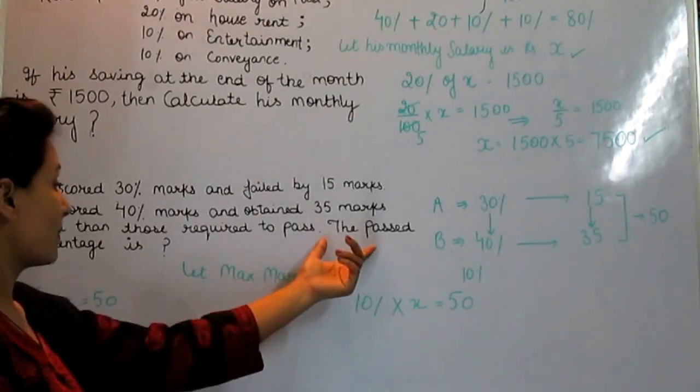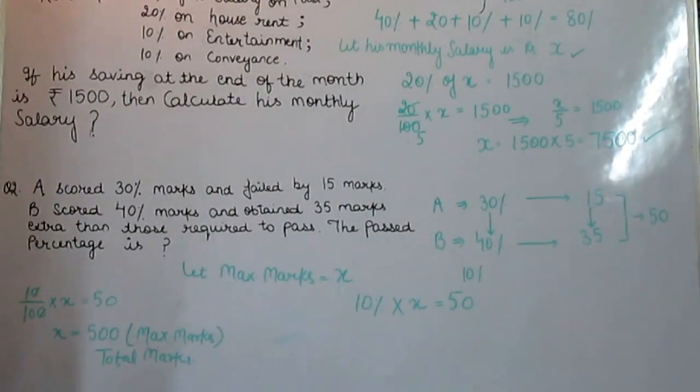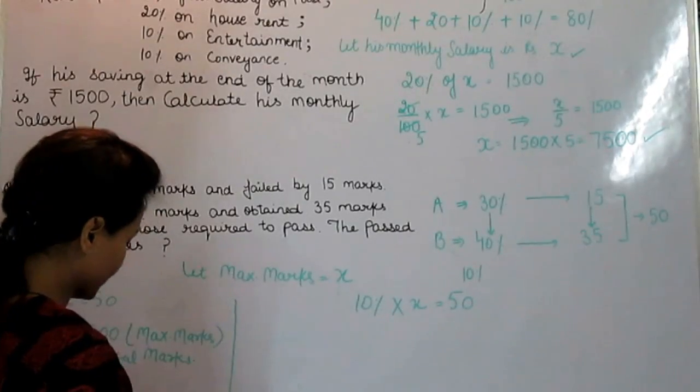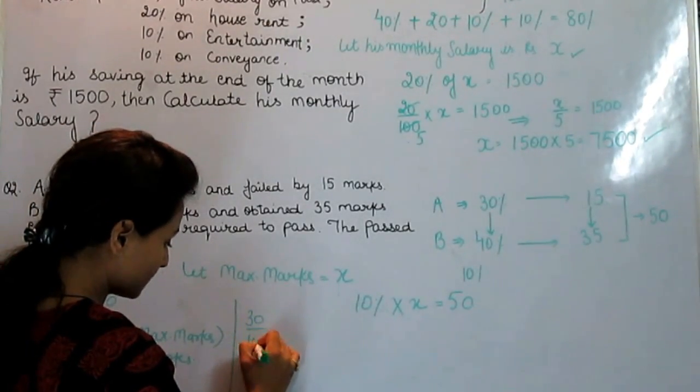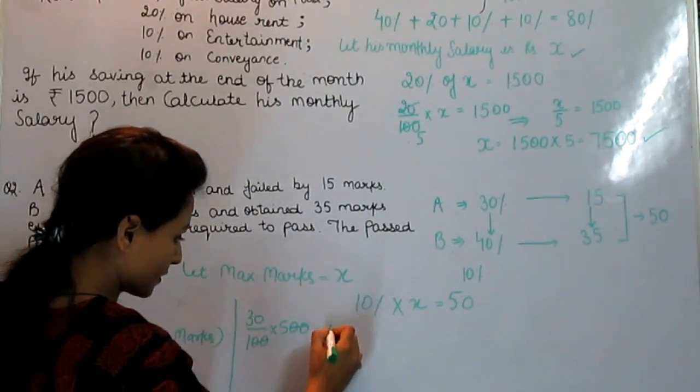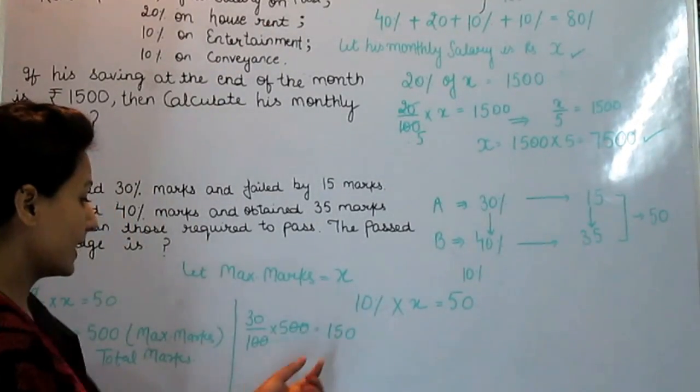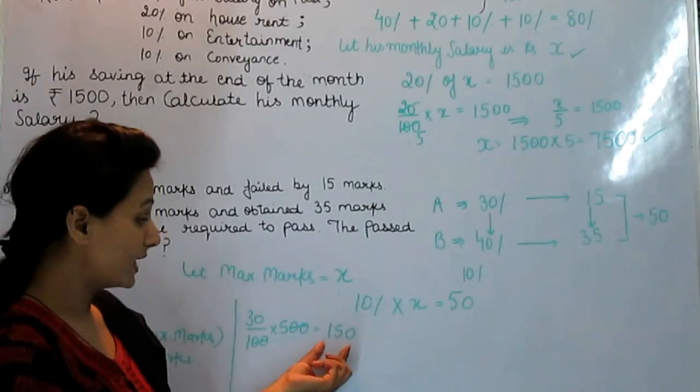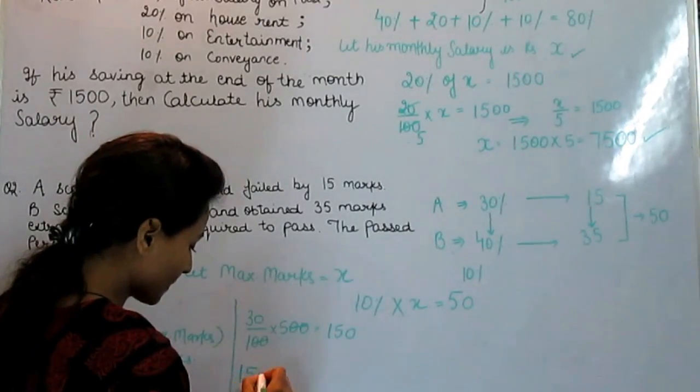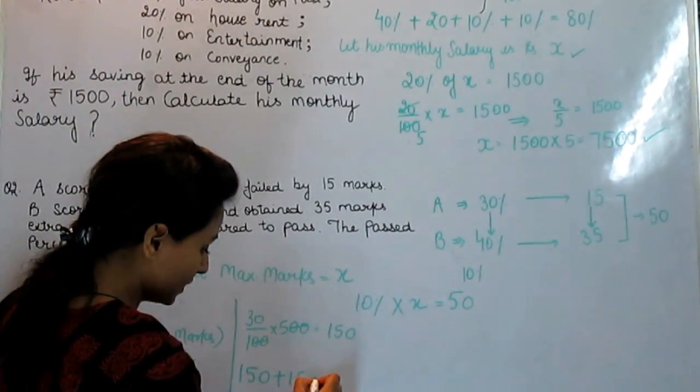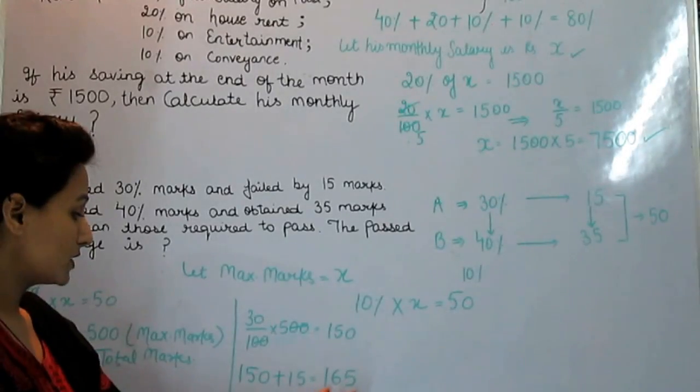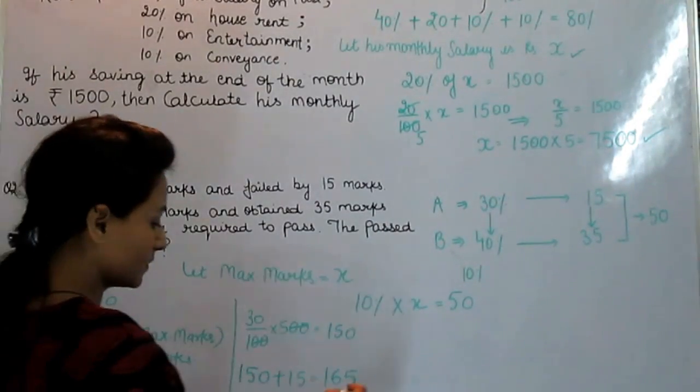But we need to get the passed percentage. A is failed by 30 percent. So now second step is 30 percent of total marks is 150. It means A got 150 marks and he was failed by 15 marks. It means if we add this 15 marks in 150, we get the passed number. 165 is the number which was required to pass. This was the passing marks.